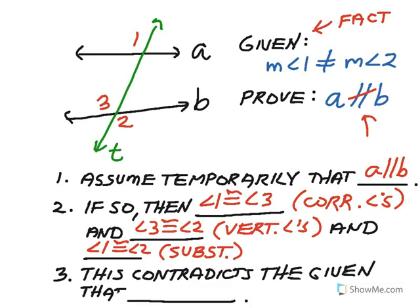Okay. Then the third step is I say, well, I just said that angle one is congruent to angle two. This contradicts the given statement that is factual, that in fact measure of angle one is not congruent to the measure of angle two.